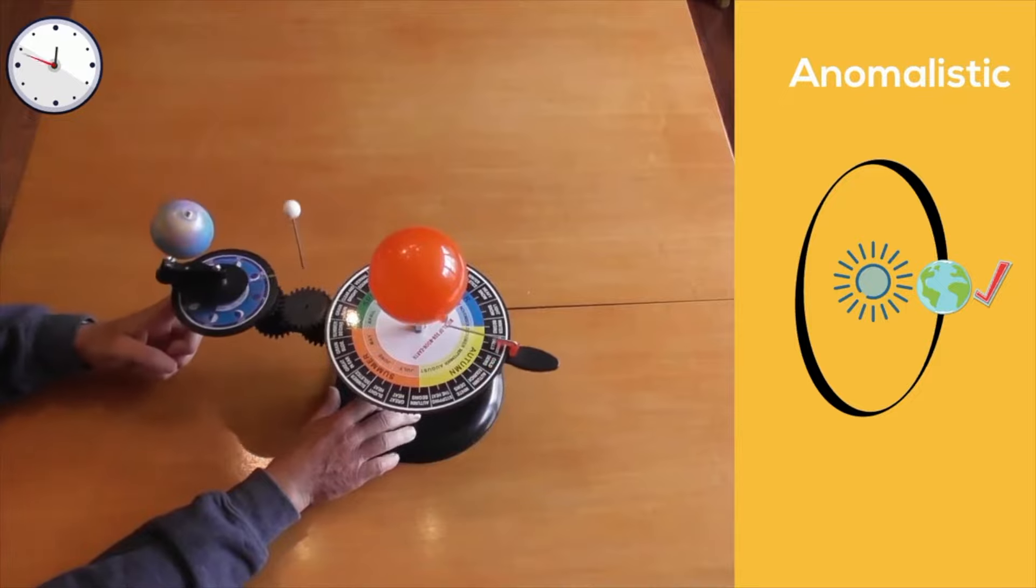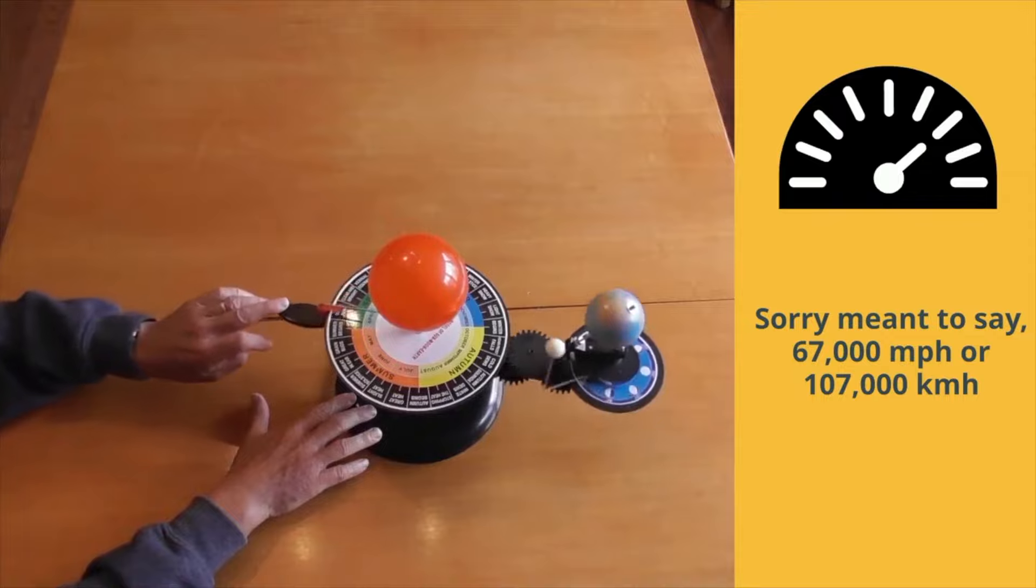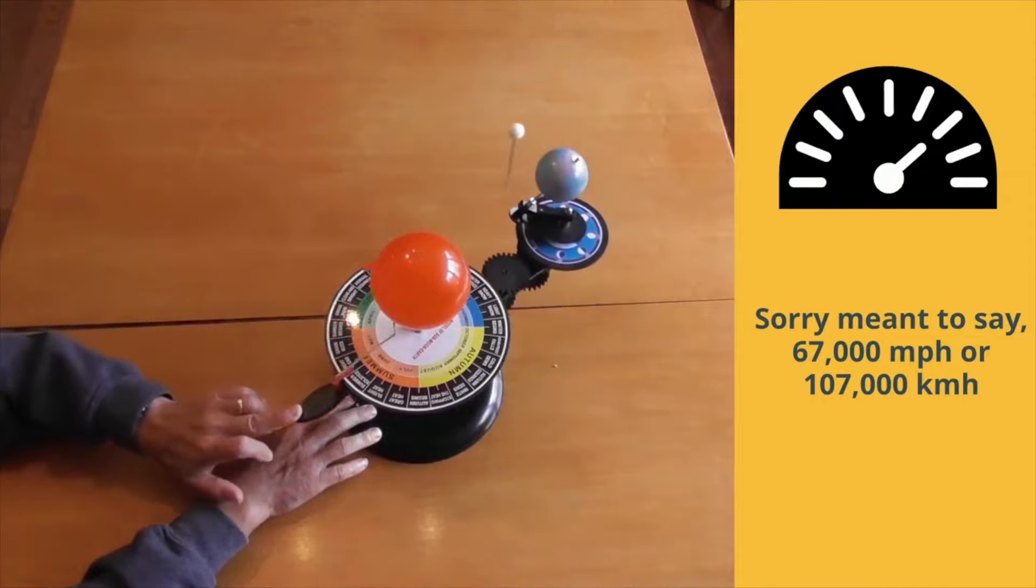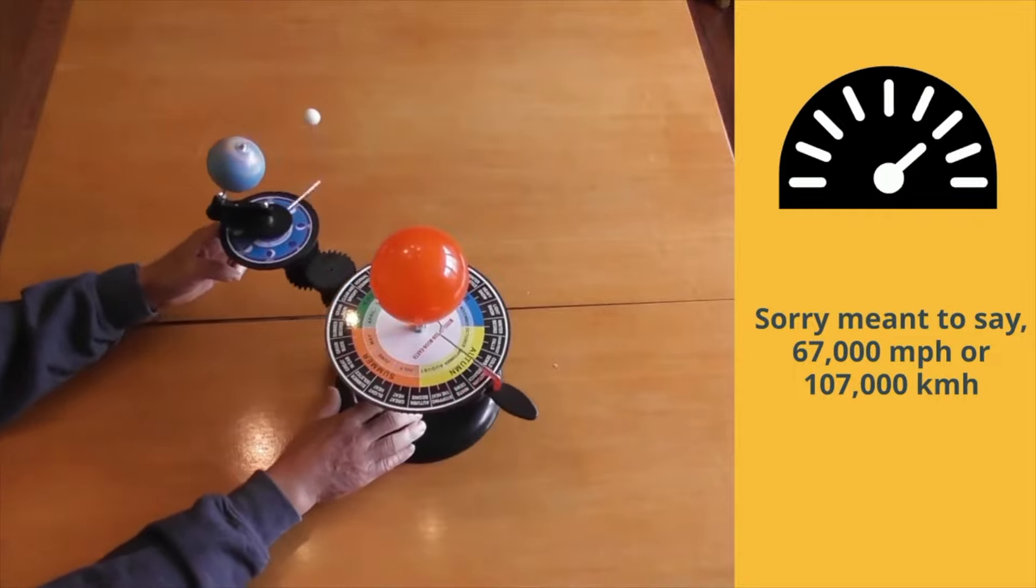As the Earth is traveling around the Sun, it travels at an amazing speed of about 675,000 miles per hour, which would be roughly 107,000 kilometers per hour.